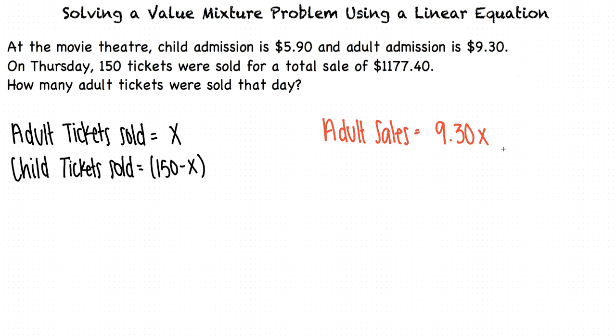To find the sales of child tickets, we need to multiply the number of child tickets sold, 150 minus x, by the child admission price, $5.90.